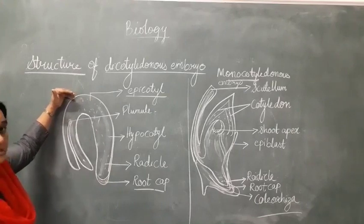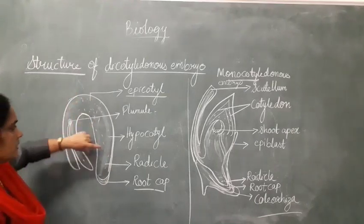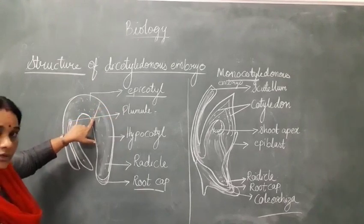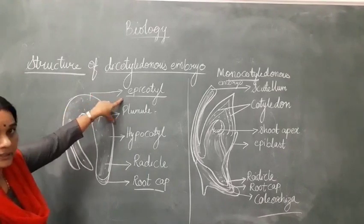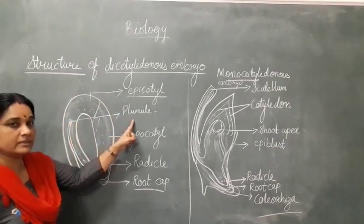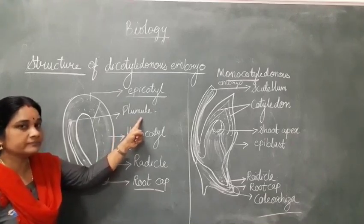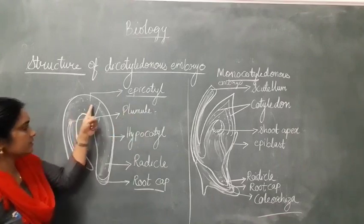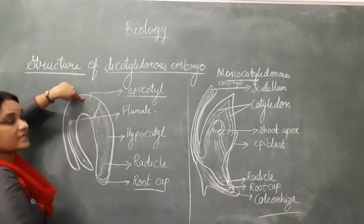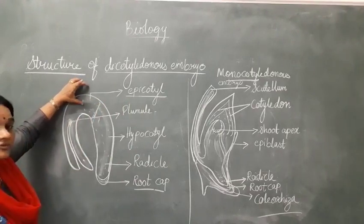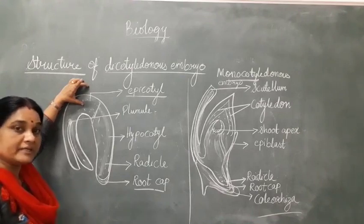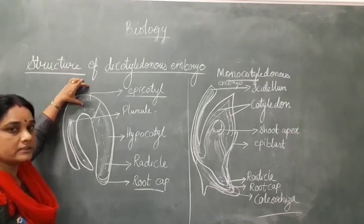The structure of a dicot plant's embryo is very important. The main structure is the embryonal axis. Above the embryonal axis is the part known as epicotyl, and in the center is the plumule, which consists of meristematic tissues that give rise to the shoot system. Just between the plumule and the embryonal axis is the epicotyl structure, whose growth will be helpful during germination of the seed — determining whether germination is epigeal or hypogeal, which we will study later.